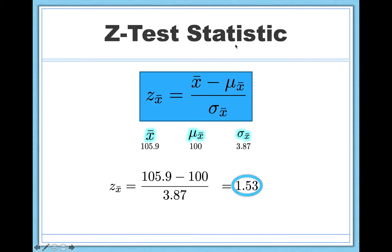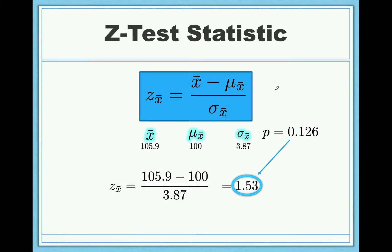So let's go back to our z-test statistic. This is what we calculated before, so this is our 1.53, that's what z equals. If you plug this into a software, you would get p equals 0.126.